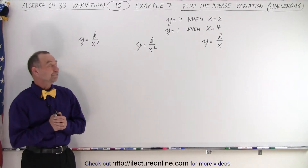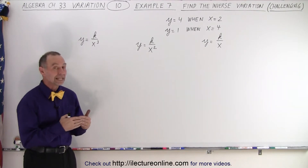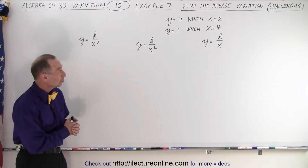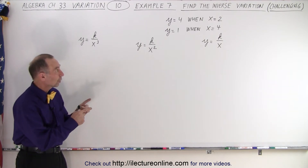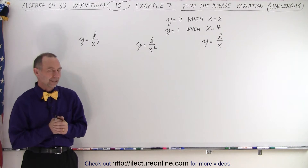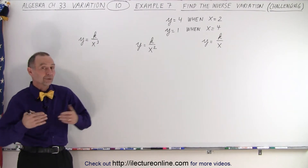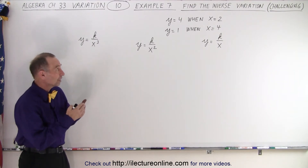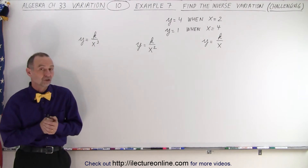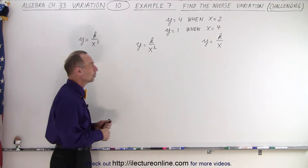Welcome to What Lecture Online. So which of these three inverse variation equations is the correct one to associate with those values for y and x? How do we know that, in the first place, we're looking for an equation that has an inverse variation relationship instead of a direct variation relationship?